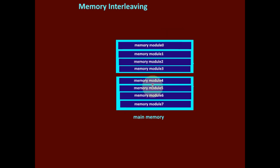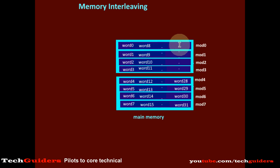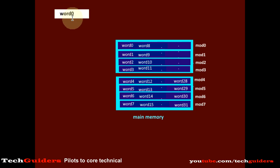Now if we organize the main memory to be a set of memory modules and if we are using the method of memory interleaving such that successive words are kept in successive memory modules, then what happens: here we have a request for the set of first 8 words, word 0 to word 7. Now each word is residing on a different memory module. Hence we will be able to parallelly handle the data requests for each word. So this is one way of memory interleaving called low-order interleaving.